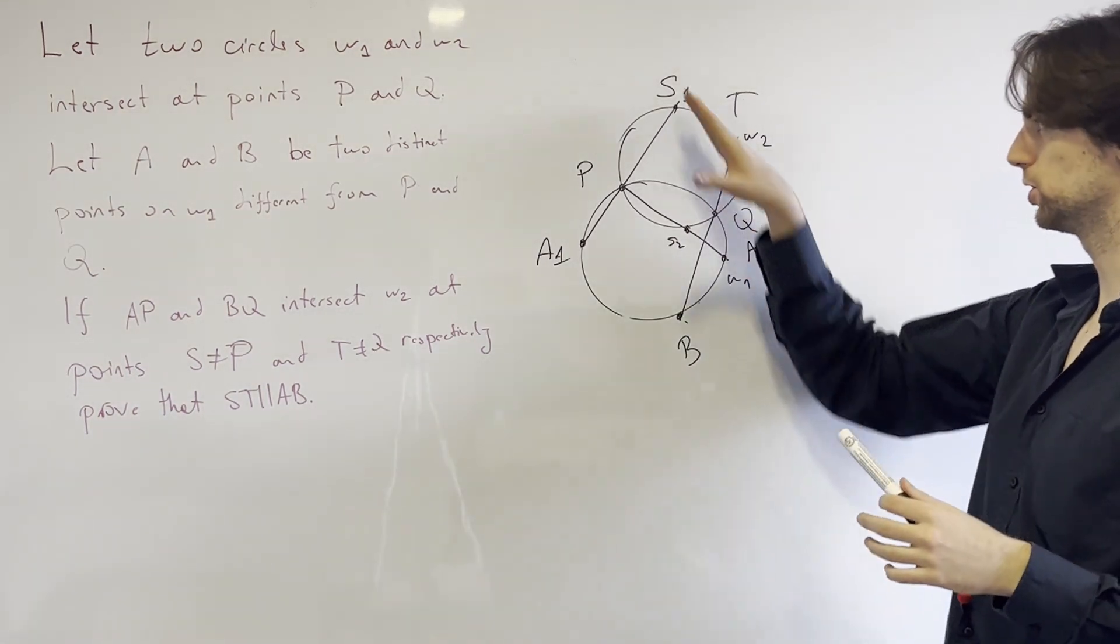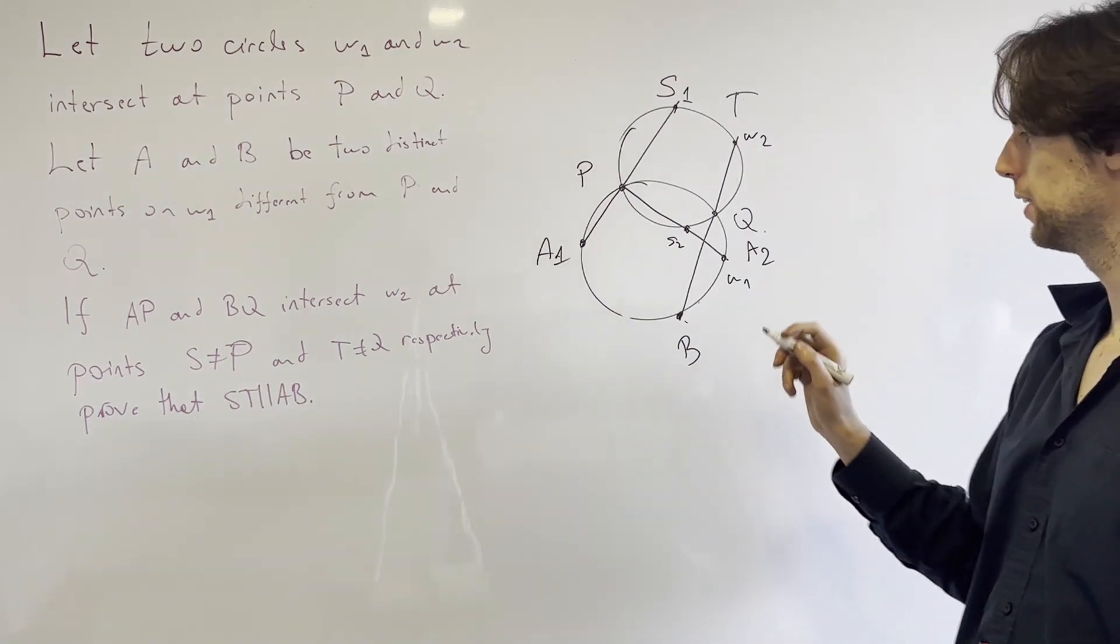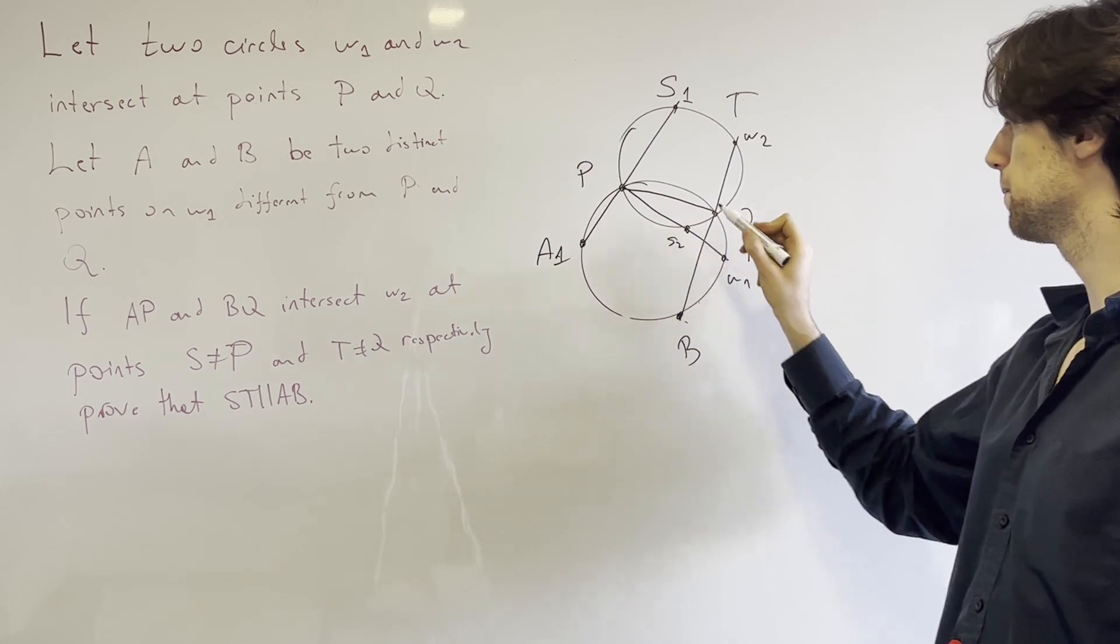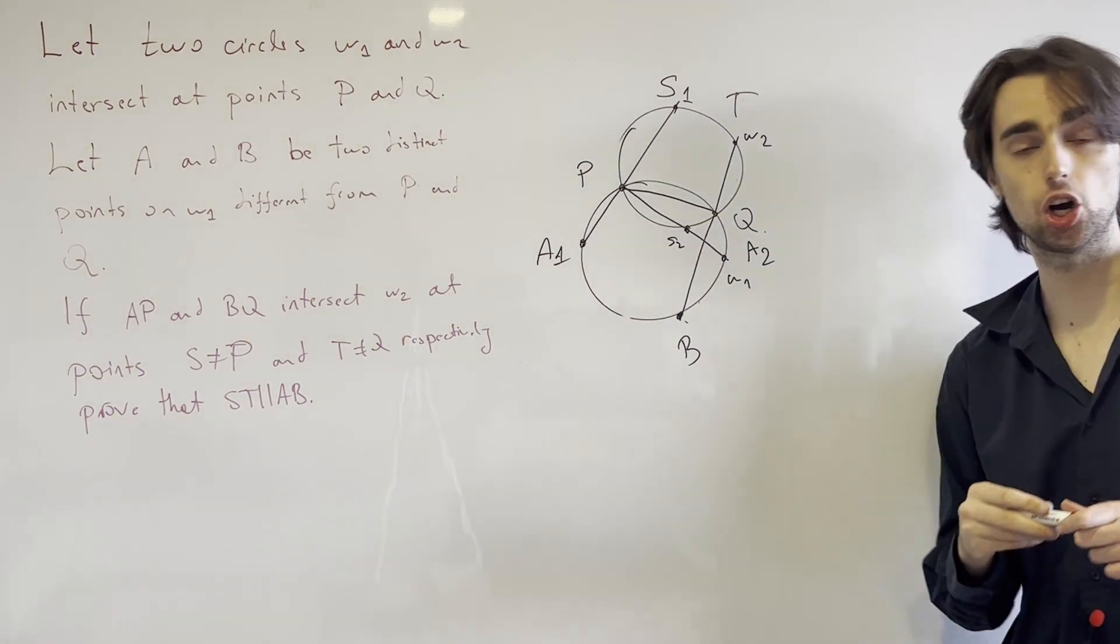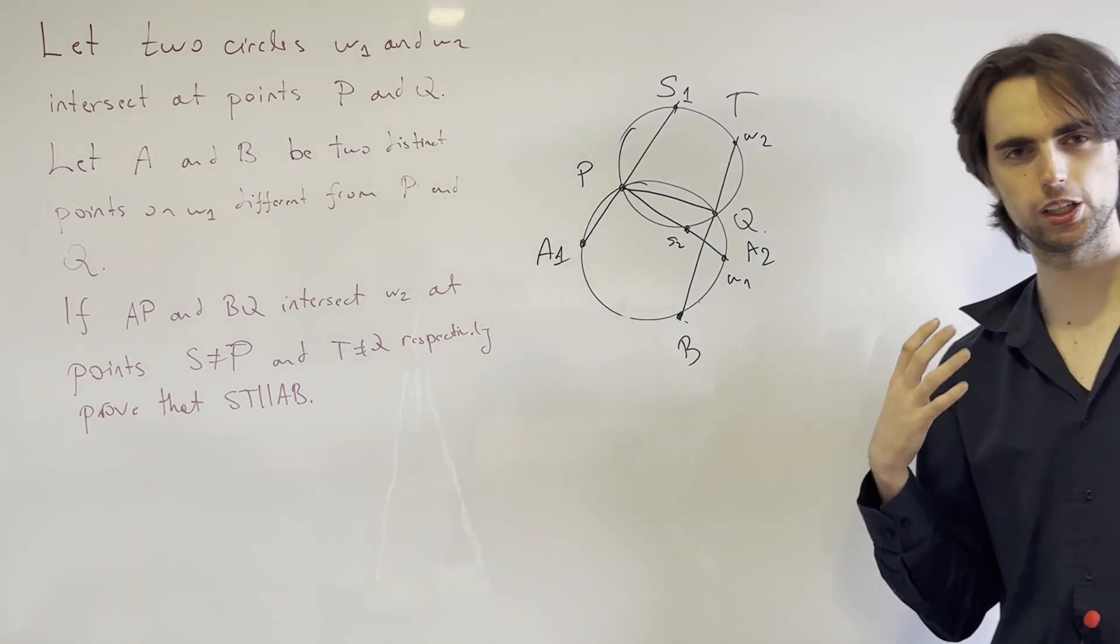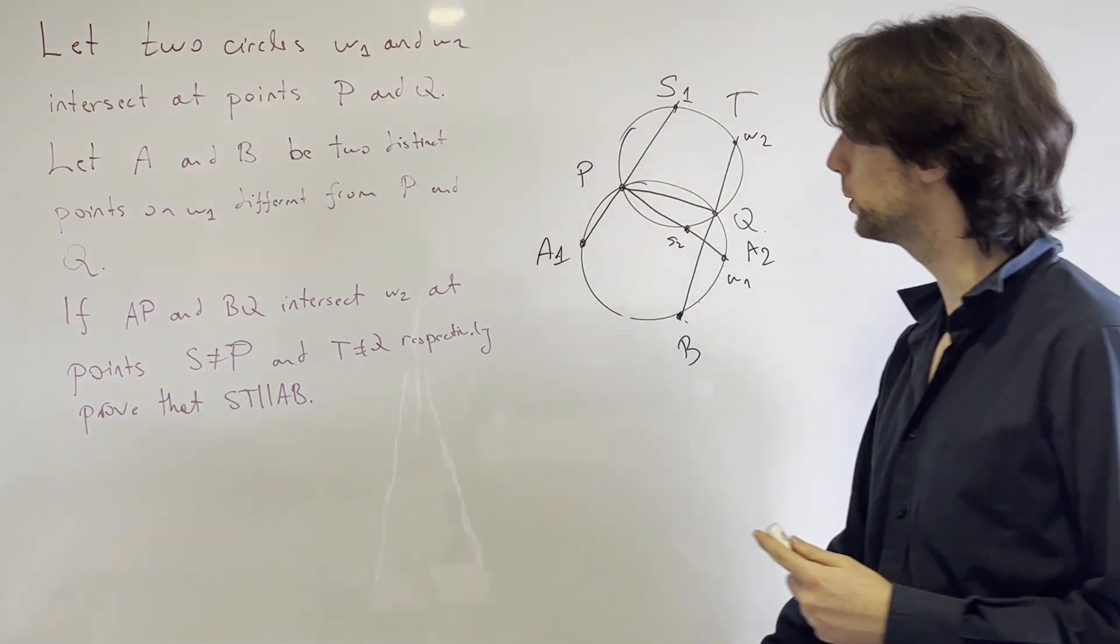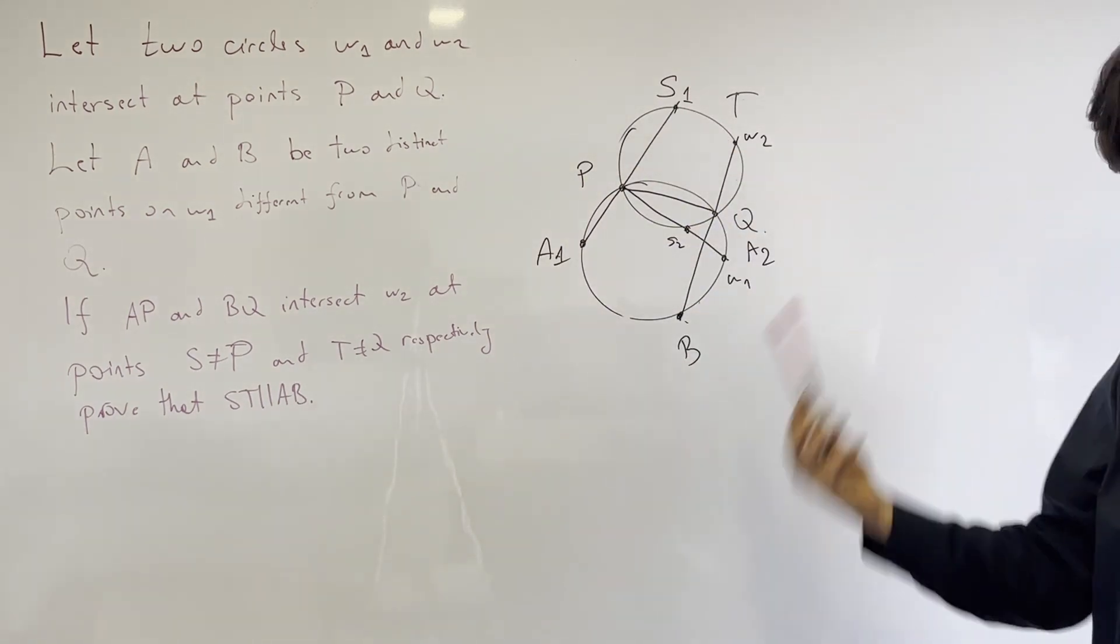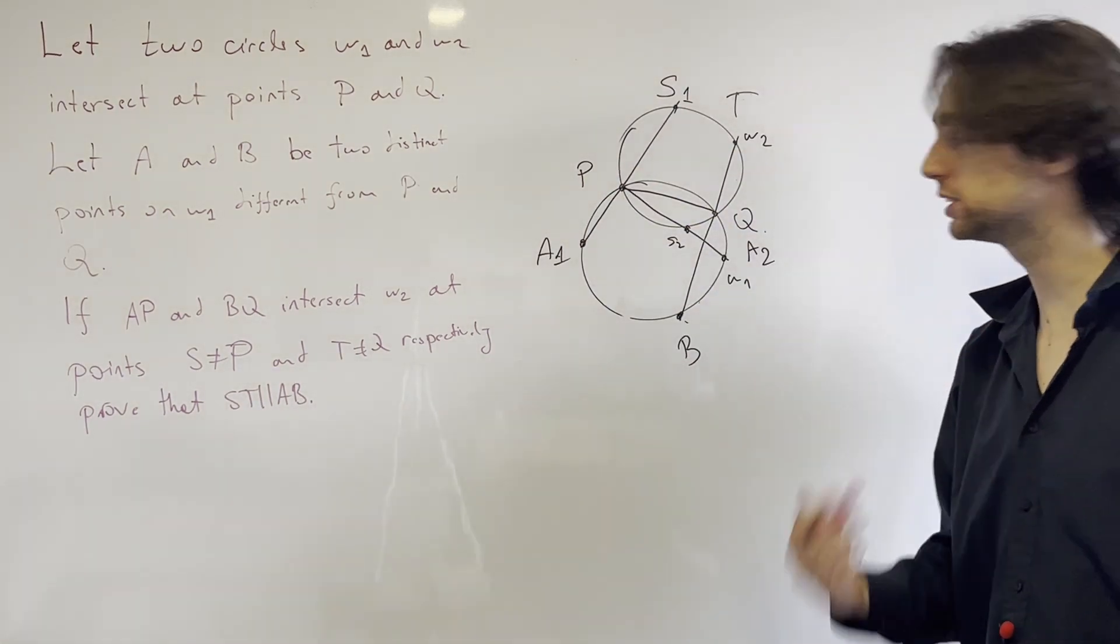Now first, let's call this one. The idea is, well we have PQ is a common chord for both of these circles so maybe there's something we can use there. Also we have that A1, S1, and P are collinear, so again maybe there's something to use there as well.